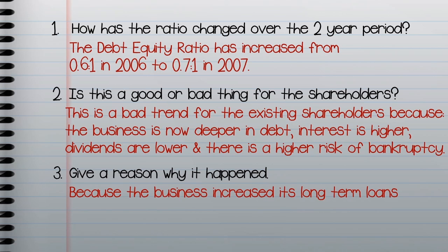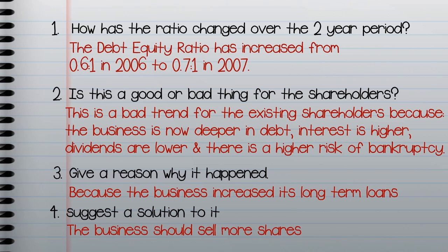Your final comment should be a suggestion or solution to the problem. Given that the business has borrowed more and the debt equity ratio has increased, the solution is that the business owner should not borrow more money in future — instead, she should sell shares to raise the money she needs for her business.